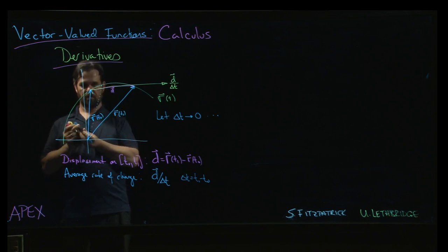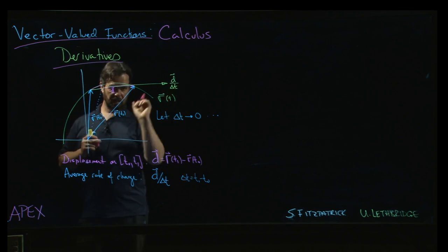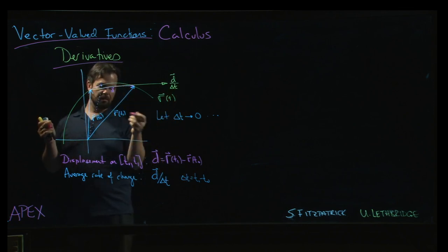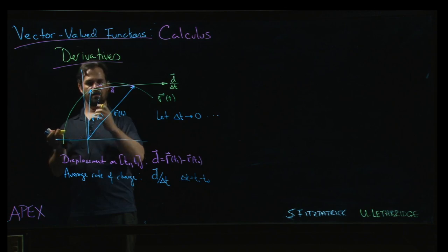Well, my displacement vector will be much smaller, but the delta t that I'm dividing by is also much smaller, right? And so divided by a much smaller number rescales and gives me a much bigger vector.